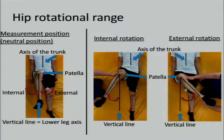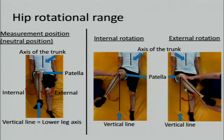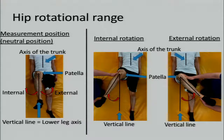One method to measure hip rotational range is to measure the movement of the lower leg from the vertical line, which is drawn from the center of the patella and parallel to the axis of the trunk on supine position with 90 degrees of flexion of the hip and knee. One tester passively rotates the patient's hip internally and externally, and another measures the angle using a goniometer with the stable arm on the vertical line and the mobile arm on the lower leg axis.